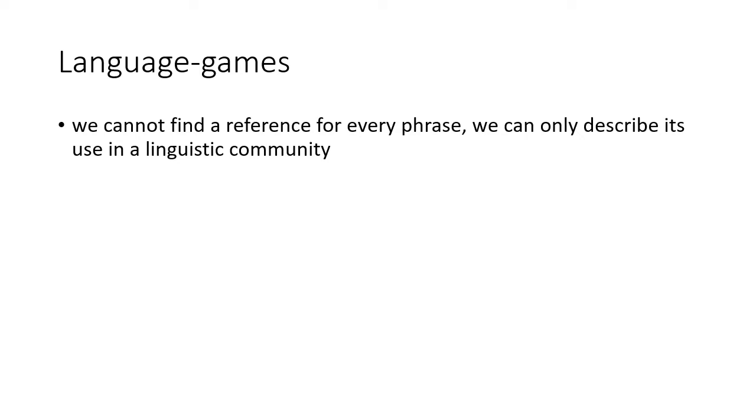In Philosophical Investigations, Wittgenstein came to a conclusion that we cannot find a reference for every phrase, because some phrases do not refer to anything real. According to later Wittgenstein, we can only describe its use in a linguistic community. And I stress out the term 'use.' This is what Wittgenstein's approach to language is based on: use. So we can say that it's some kind of pragmatic approach to language that deals with the context of every sentence or every phrase.